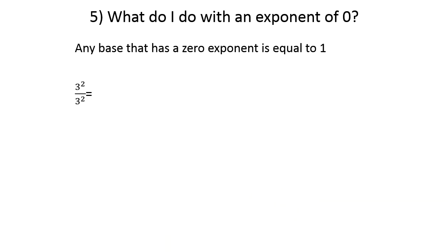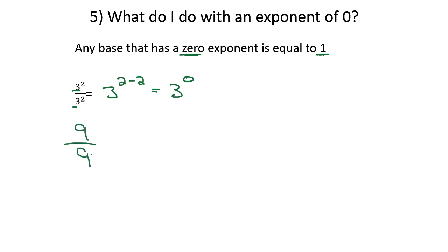Our last rule has to do with zero exponents. Any base that has a zero exponent is equal to 1. For example, 3 squared over 3 squared equals 3 to the 2 minus 2, which is 3 to the zero. Also, 3 squared is 9, and 9 divided by 9 is 1, so 3 to the zero power equals 1. Raising any base to a zero power is the same as dividing that base by itself, which equals 1. Anything raised to the zero power is equal to 1.